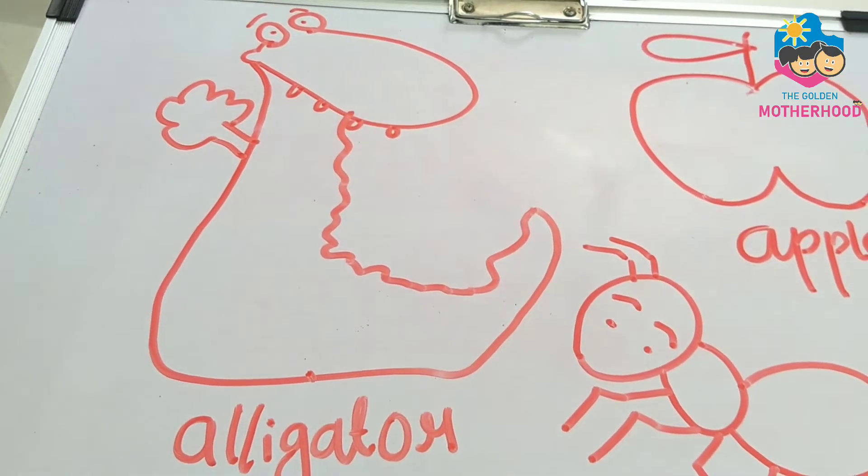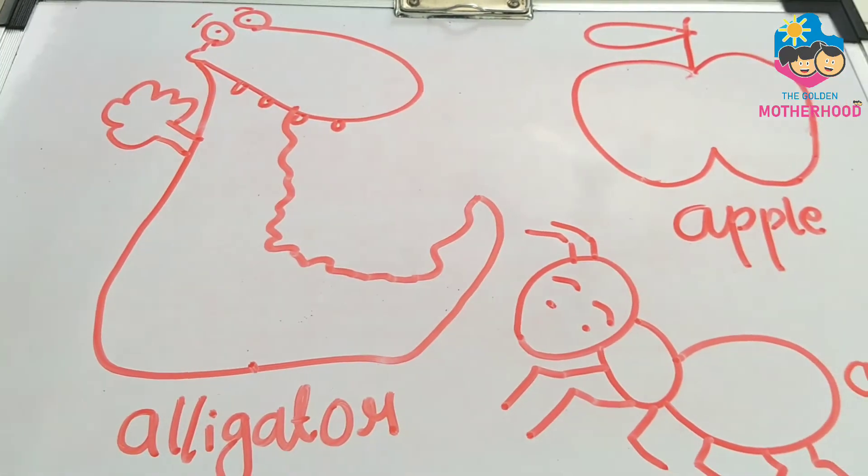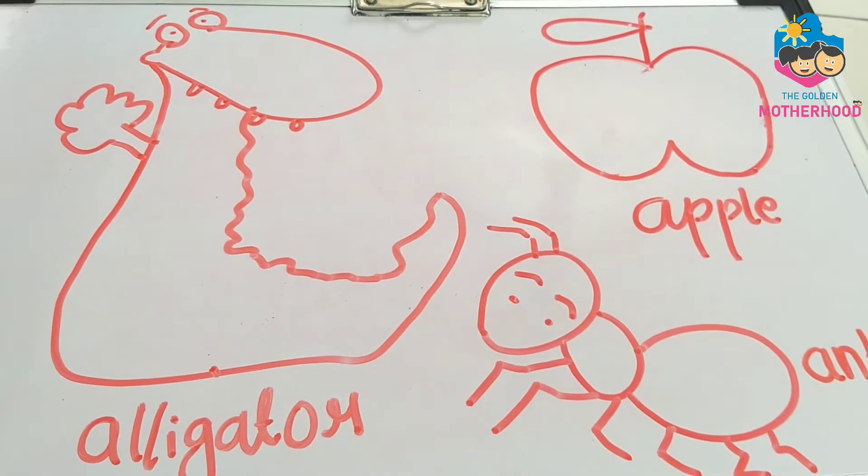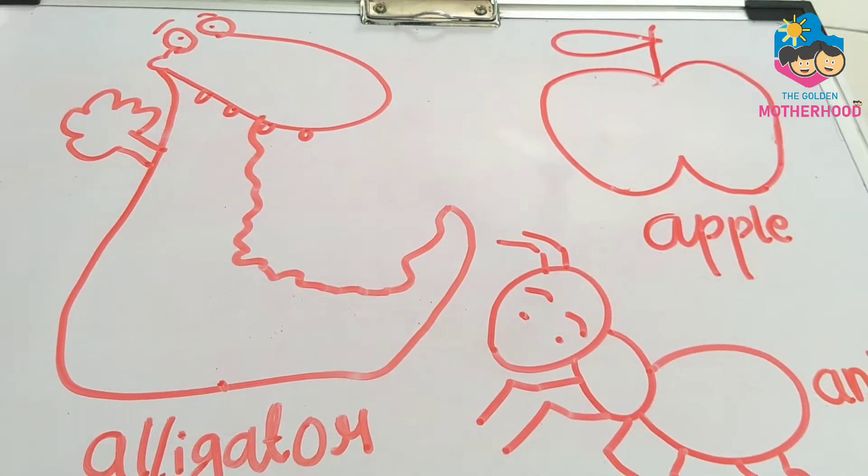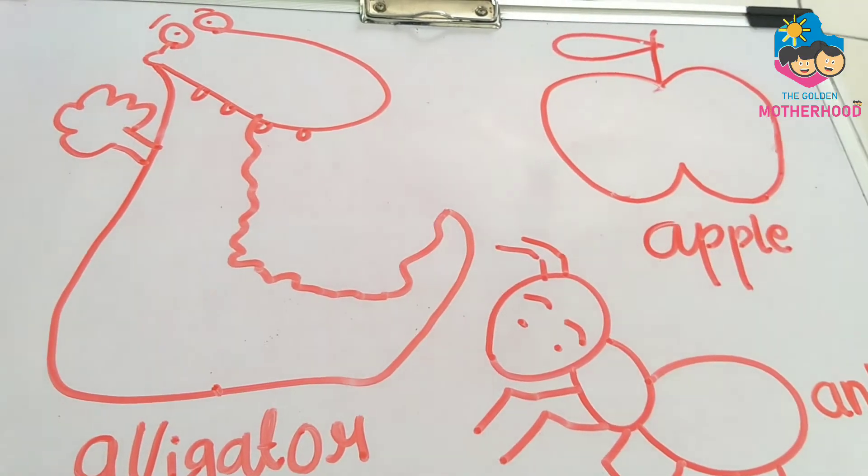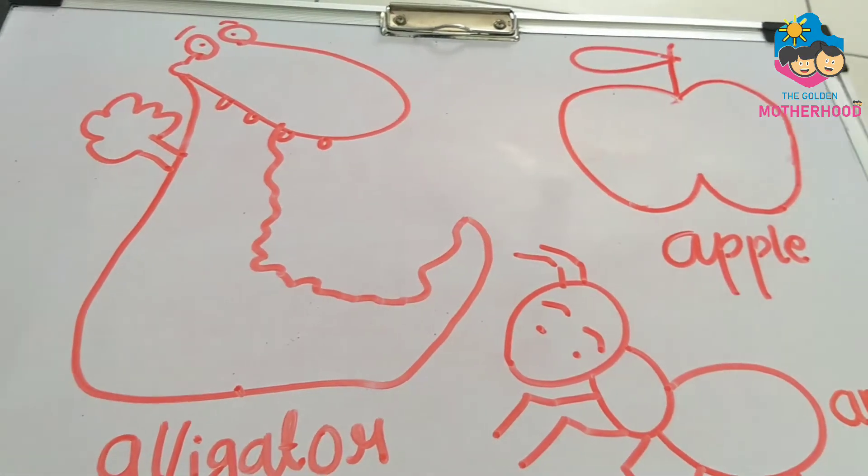Alligator ka synonym hai crocodile. Crocodile ko hum alligator bhi bolte hai. Or A for arrow, A for ankle, A for eggs, etc.